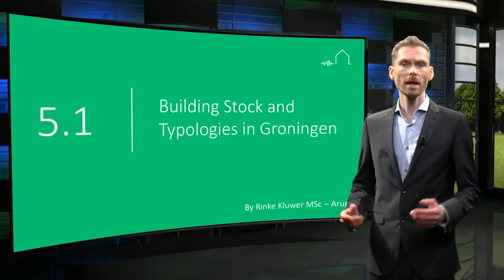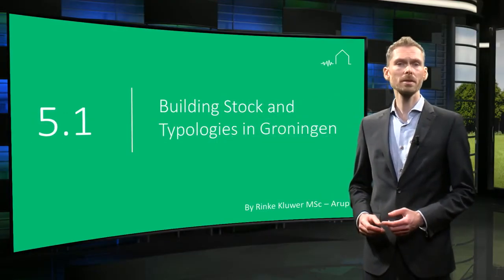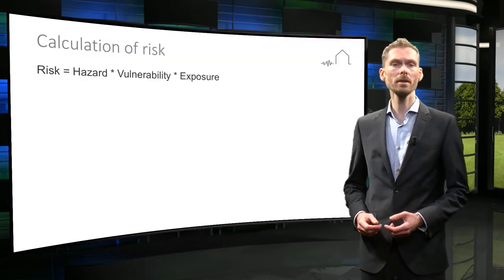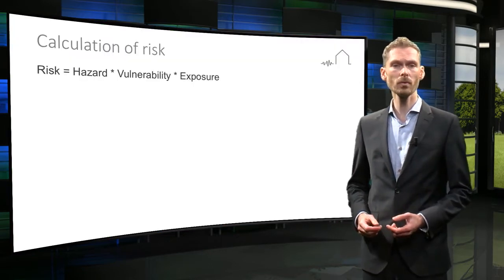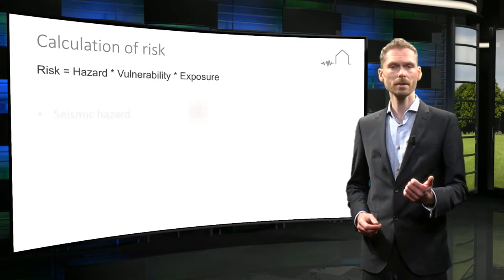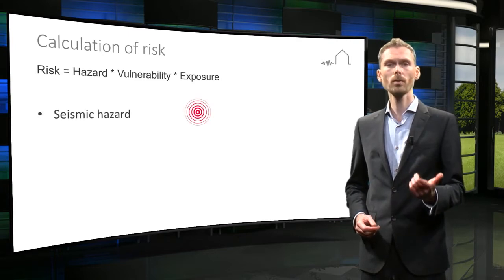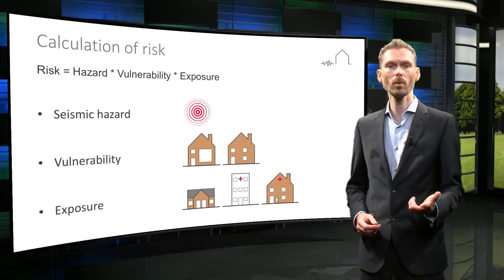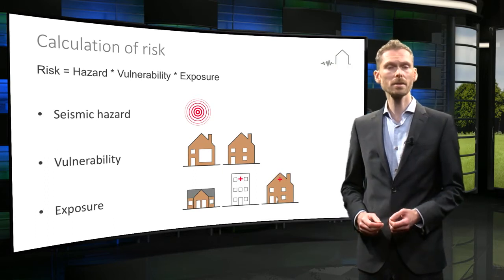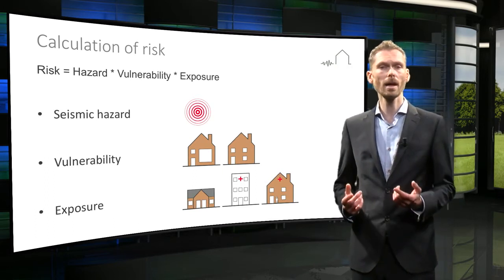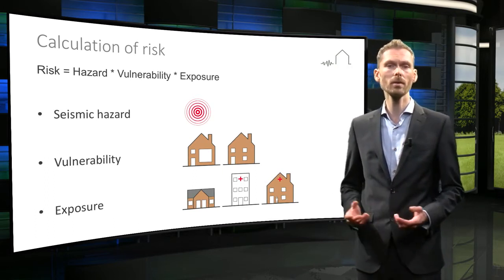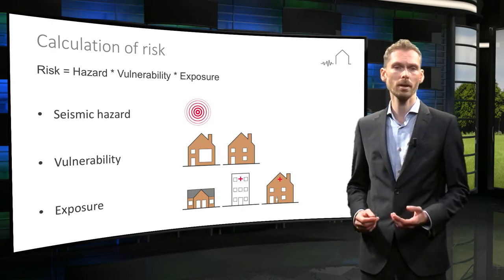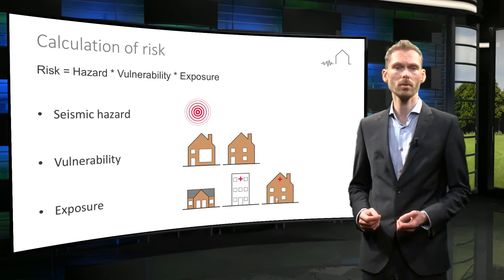Welcome to this lecture on seismic risk. As described in the lecture on seismic risk, seismic risk is calculated as a combination of three factors: the seismic hazard, the vulnerability of the buildings, and the exposure of the people in the buildings. In this lecture I will explain how the building stock can be evaluated in terms of both vulnerability and exposure in order to determine the risk.